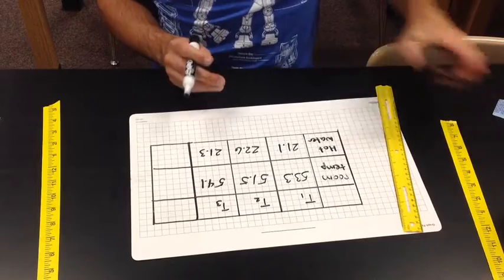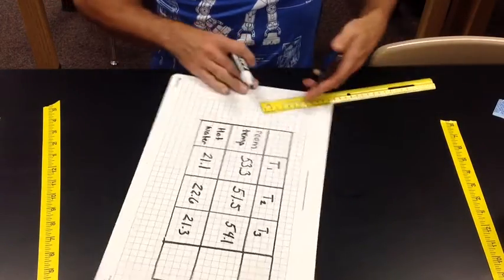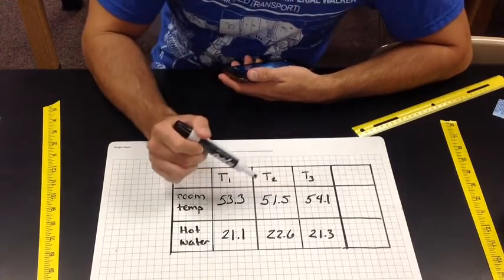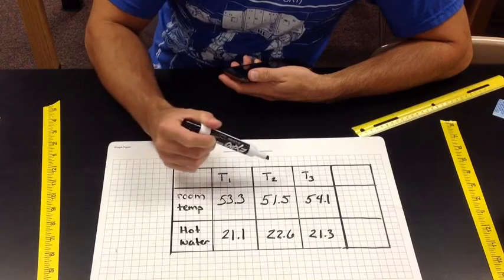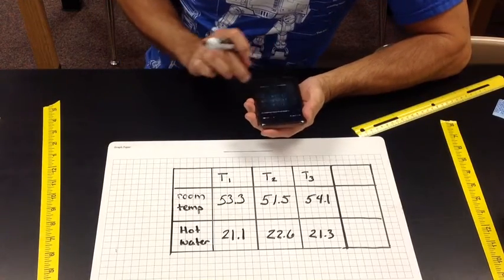So once I'm done with this, I'll need a calculator. Because to figure out the average, you want to add up all three trials and then divide that number by the number of trials you had. So I'll be adding up these three numbers and then dividing by three. So let me do that.